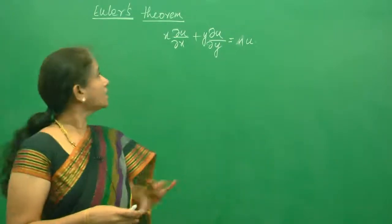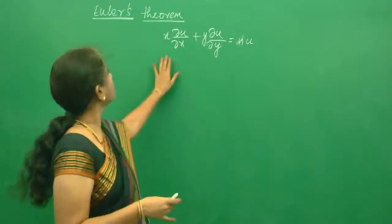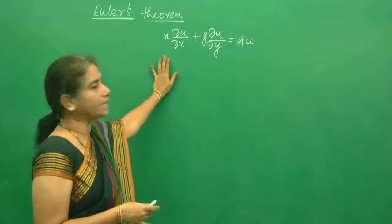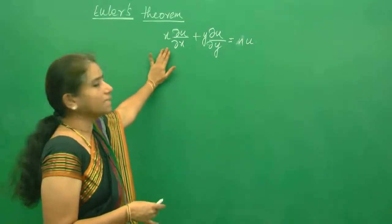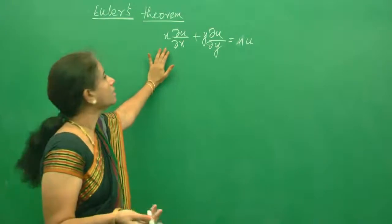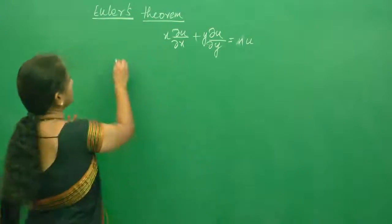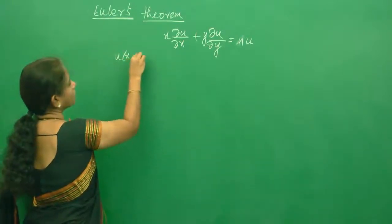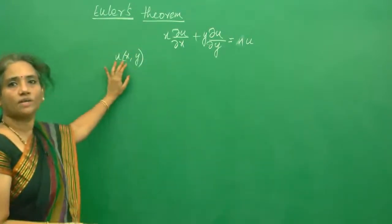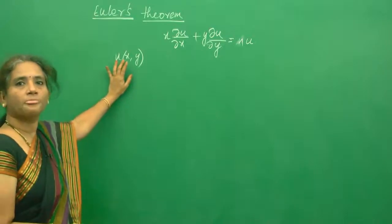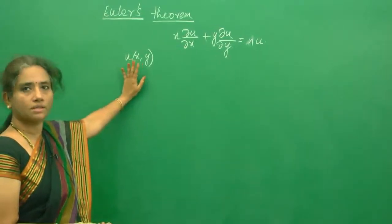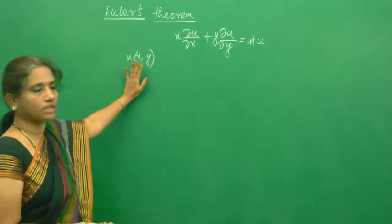Hi everybody, let us do one problem in Euler's theorem. Before that, let us discuss what is Euler's theorem. Very important thing is u is the function of x and y, and the function should be homogeneous. Then only the theorem will work.